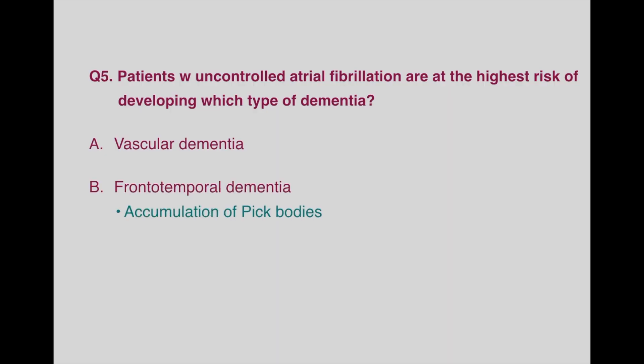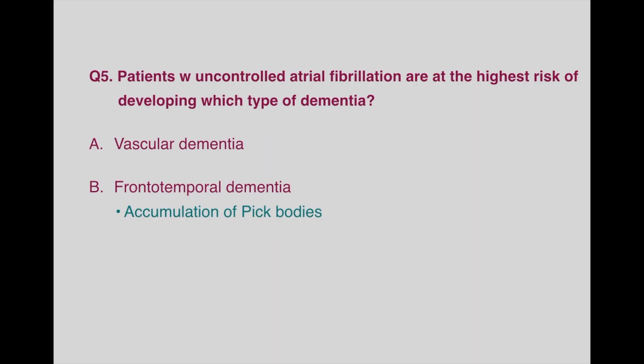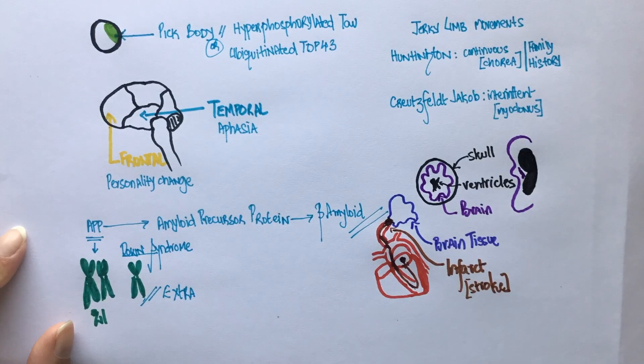Frontotemporal dementia is associated with accumulation of Pick bodies and is not related to strokes. The main pathology of Lewy body dementia is the accumulation of alpha-synuclein, and strokes are not associated with this type of dementia. Fun fact: patients with atrial fibrillation are also at a higher risk of developing Alzheimer's.